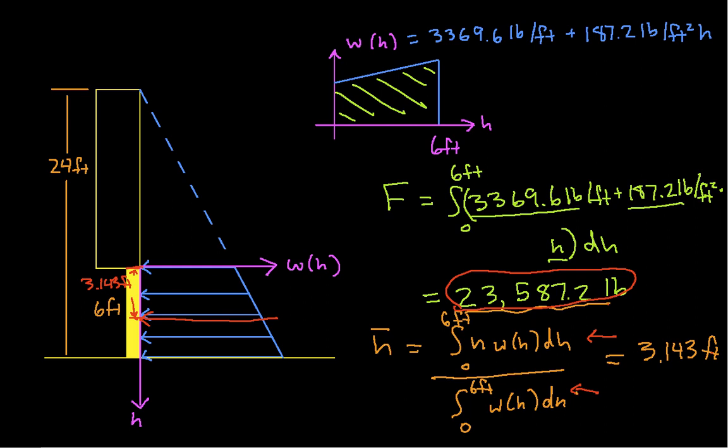Now, I have to say I've chosen examples that are easy to integrate because I don't like to spend a whole lot of time on camera integrating ugly, complicated things. But conceptually, if I had a function here that was more complicated, all I would do to get F is integrate the function and to find H-bar, integrate H times the function and divide it by F.